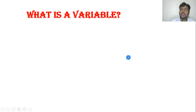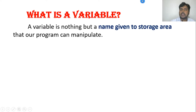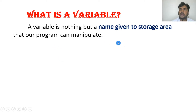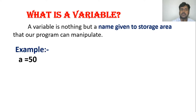Now, what is a variable? A variable is nothing but a name given to a storage area that our program can manipulate. For example, we have memory, and we assign a value to a memory storage area. Instead of calling it by the storage number, we call it by the variable name. For example, if I say a = 50, then 50 will be stored somewhere in memory.